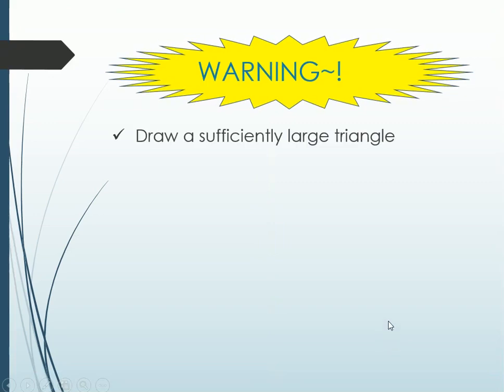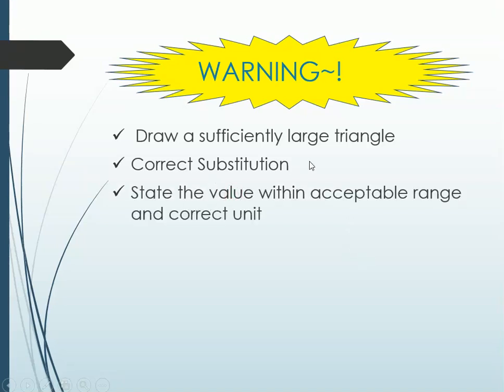Warning. Please draw a sufficiently large triangle if you want to have a more accurate reading. You have to correct substitute into the value from the graph. And please remember to press your calculator correctly. State the value within the acceptable range and correct unit. Acceptable range means 3 scientific notation and 2 decimal points. 3 decimal points I can accept but the best would be 2 decimal points. We will reject the answer in fraction. Normally in physics, we do not accept the answer in fraction except for certain cases only. But for graph, we never accept the answer in fraction.